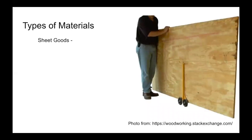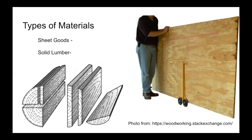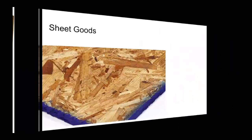The first ones we're going to talk about are the different types of materials. We typically have two different types: the first being our sheet goods, and these are usually man-made materials. They could be material from a tree. Sheet goods typically come in a sheet that's 48 by 96, and they're going to be made out of natural wood but engineered a little differently — they'll have either layers or different textures. The other type is our solid lumber, which is typically cut from trees into logs, then into planks and different styles of material depending on what it's used for.